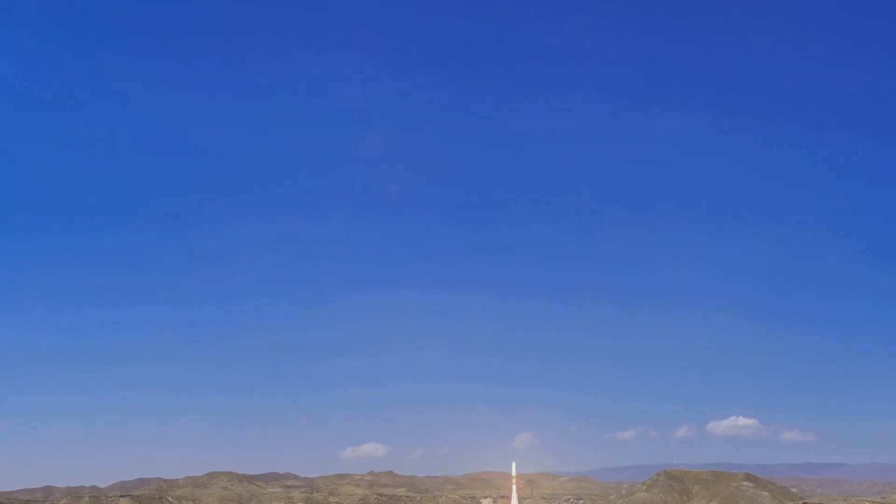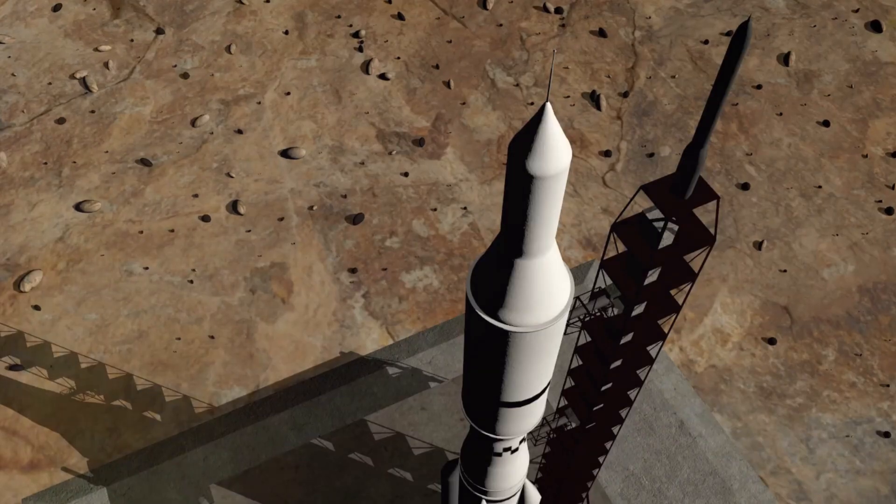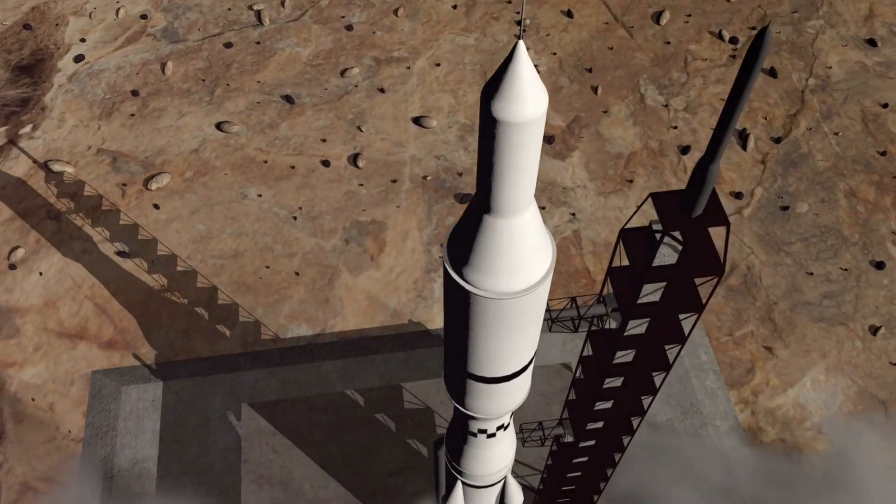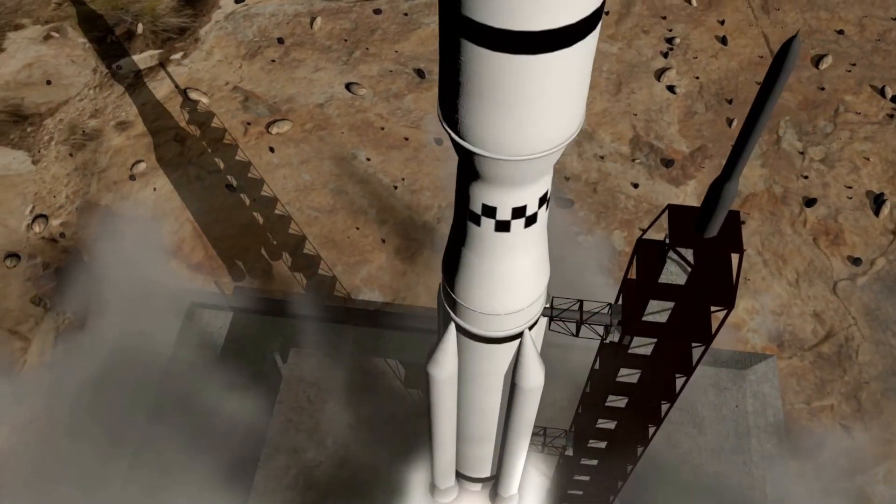The launch was not without its challenges. The James Webb Space Telescope, or JWST for short, was not just an ordinary payload. It was a delicate instrument, a masterful blend of high-tech sensors and mirrors designed to withstand the harsh conditions of space, yet sensitive enough to detect the faintest whispers from the universe. The challenge was to deliver this precious cargo into space, intact and operational.